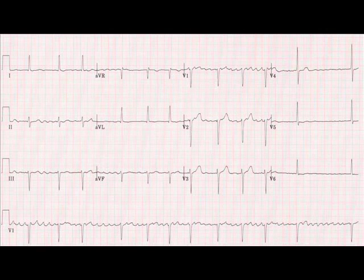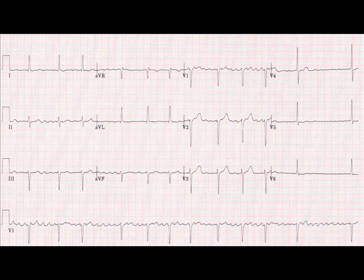Well, that's what you're looking at here. When you look at a 12-lead, it's quite useful to firstly look at the rhythm strip, which runs along the bottom of the tracing. You can see it there, labelled V1 on the bottom left. This is because when you're trying to ascertain what arrhythmia it is, you get more complexes than in the leads above.